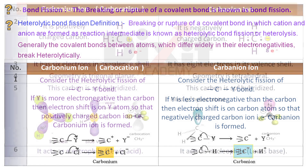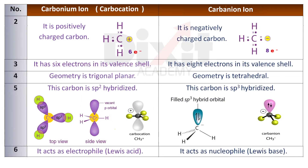Point number 2: A carbonium ion is a positively charged carbon, whereas a carbanion is a negatively charged carbon. Point number 3: A carbonium ion has 6 electrons in its valence shell, whereas a carbanion has 8 electrons in its valence shell.